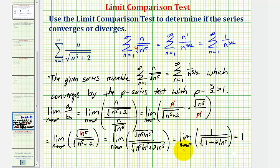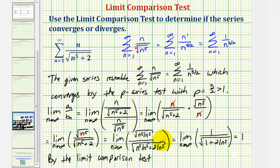Because this limit is positive and finite and we compared our series to a known convergent series, our series also converges by the limit comparison test. So by the limit comparison test, the given series converges. I hope you found this helpful.